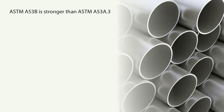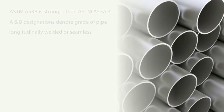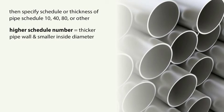ASTM A53B is stronger than ASTM A53A; the A and B designations denote the grade of the pipe. Seamless B160 is even stronger but usually costs much more than the others. ASTM A53A and A53B can be bought either longitudinally welded or seamless. After determining the designation, you then specify a schedule or thickness of pipe: schedule 10, 40, 80, or other.